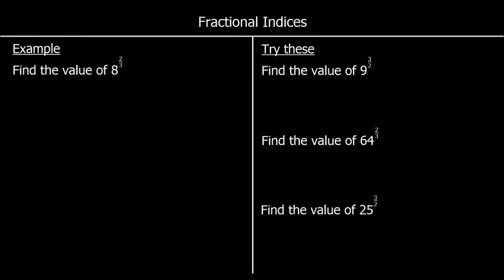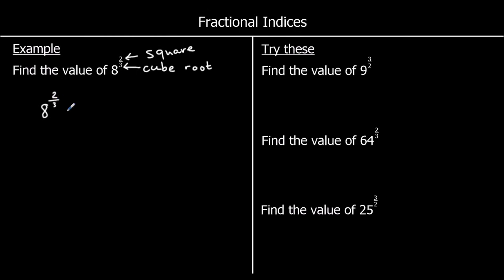Here's a different question with two parts: find the value of 8 to the power of 2 thirds. The 3 on the bottom means cube root, and the 2 on the top means square. So we're going to cube root 8 first, then square the answer — it's usually easier to do the root first. The cube root of 8 is 2, so 8 to the power of 2 thirds is the same as 2 squared, and 2 times 2 is 4. So 8 to the power of 2 thirds is equal to 4.